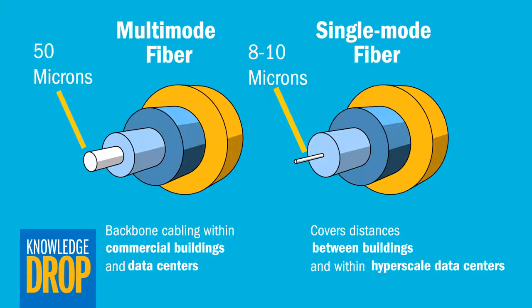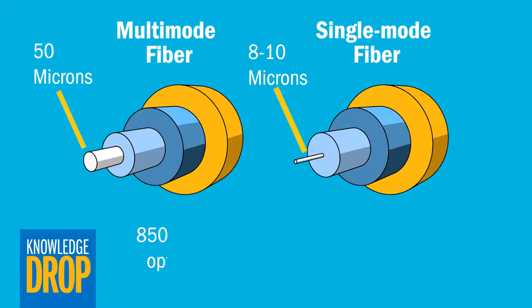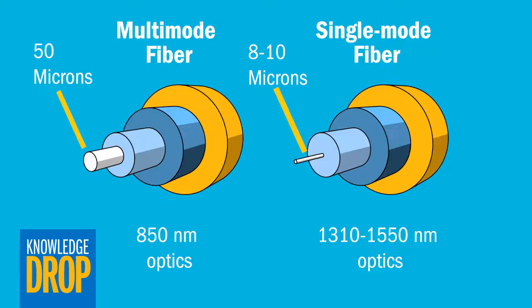Multimode fiber is a more economical choice for most commercial buildings and smaller data centers. Multimode infrastructure has the advantage of utilizing lower-cost short wavelength optics operating at 850 nanometers, which drives lower overall system costs compared to the more expensive single-mode optics, which use longer wavelength optics in the 1310 to 1550 nanometer range.